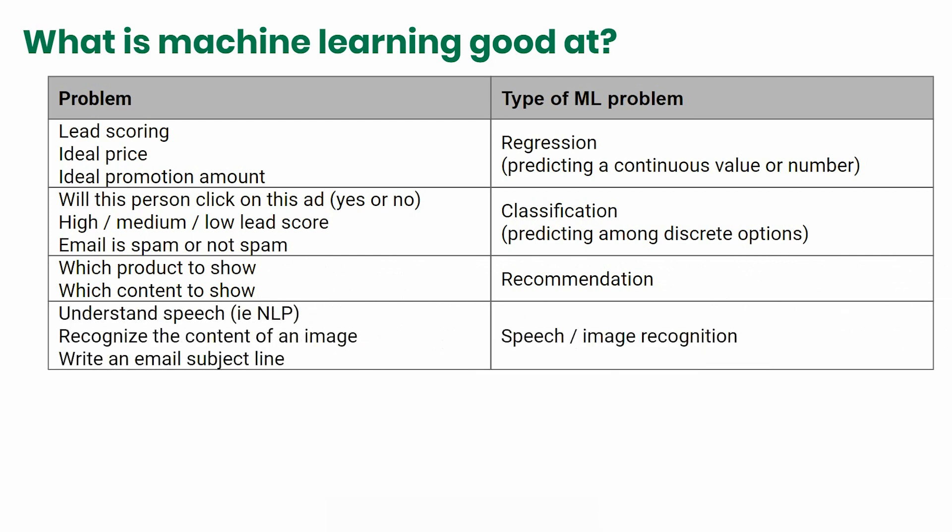If instead you're trying to figure out what someone is saying, or what's the content of an image, or how to best write an email subject line, speech and image recognition algorithms will be most helpful, and deep learning is often part of this.